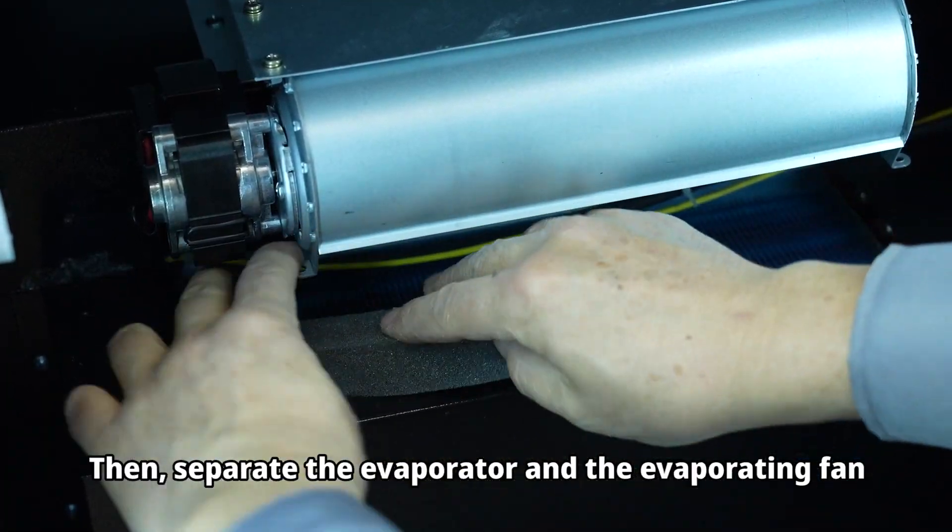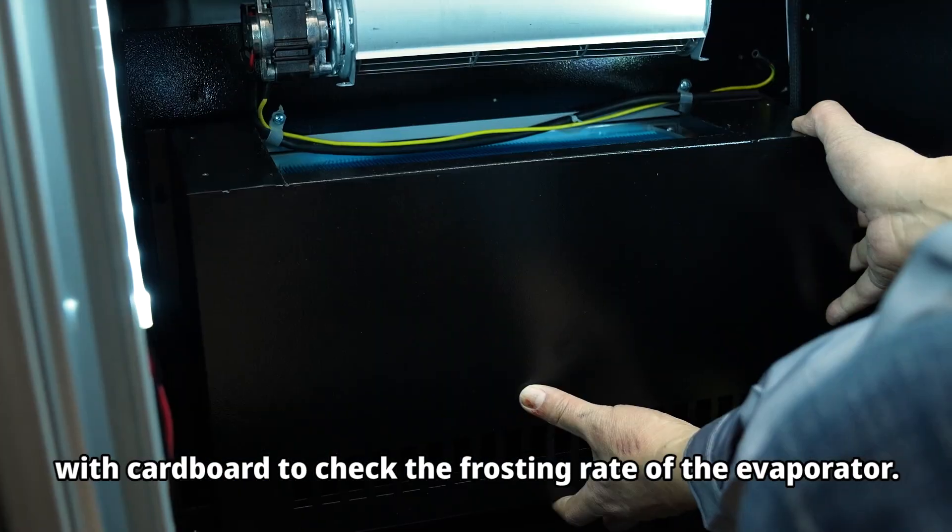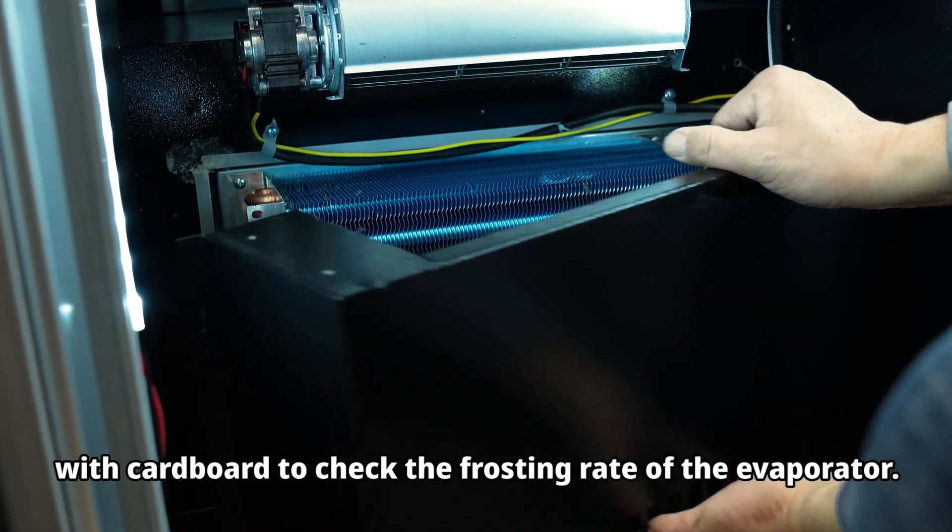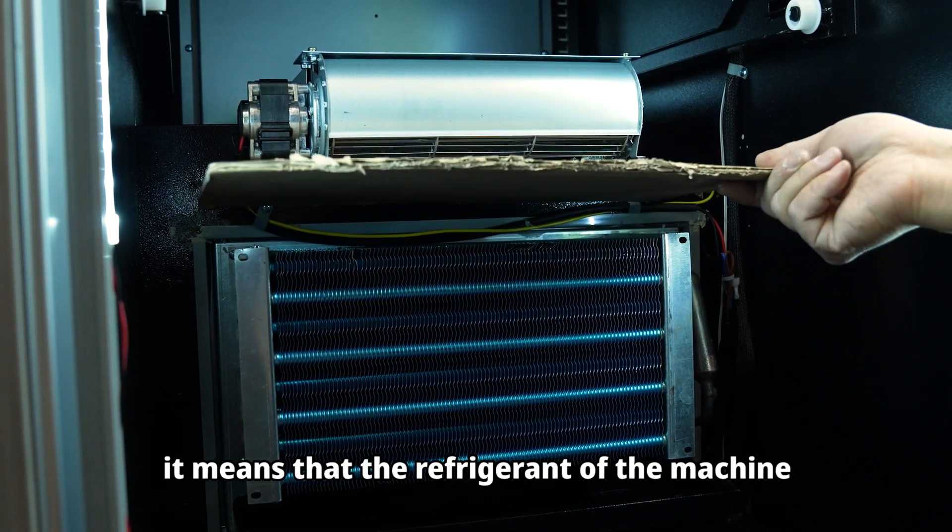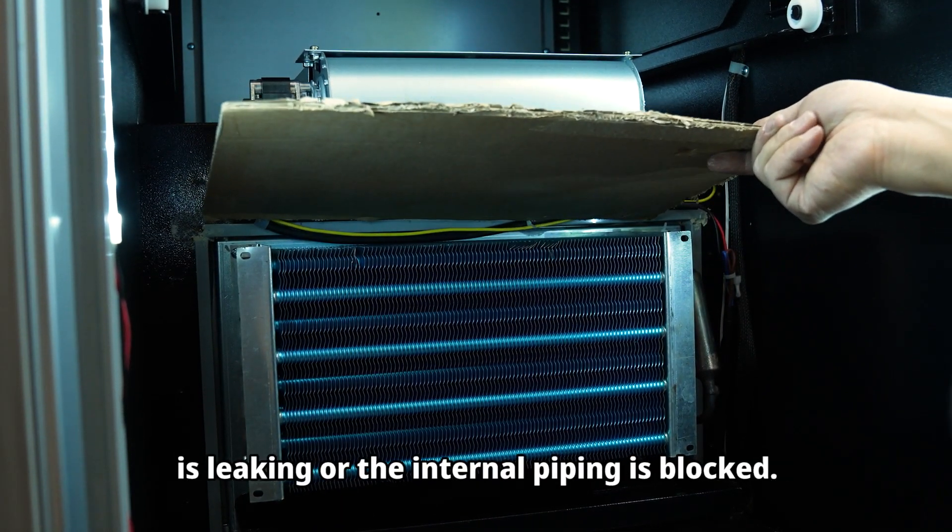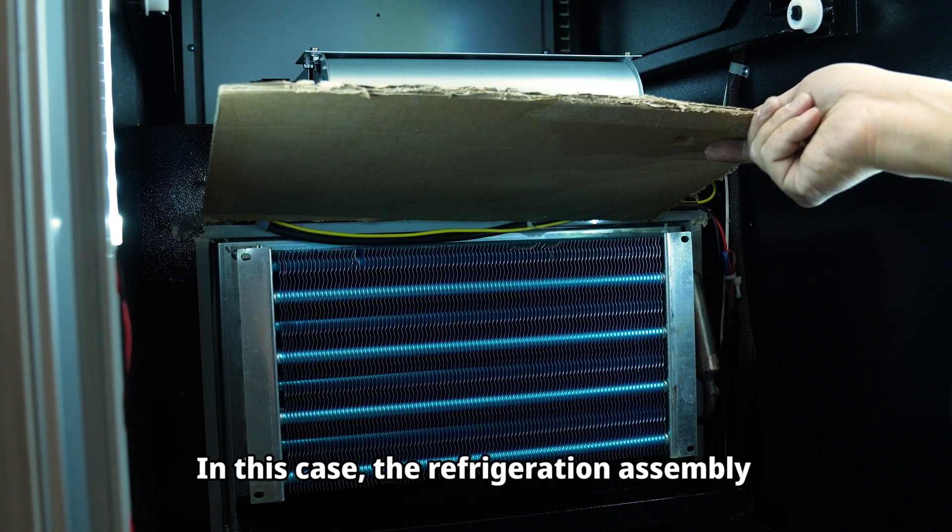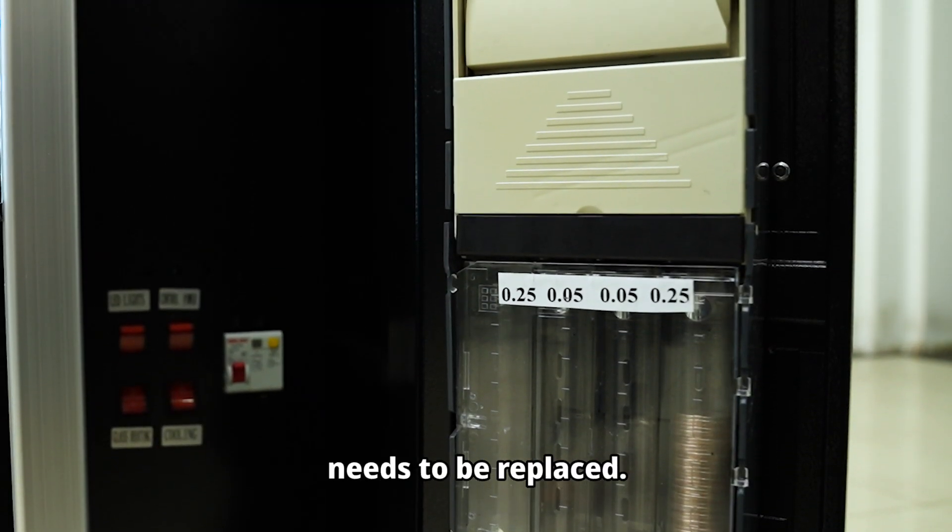Then separate the evaporator and the evaporating fan with cardboard to check the frosting rate of the evaporator. If there is no frost or partial frost, it means that the refrigerant of the machine is leaking or the internal piping is blocked. In this case, the refrigeration assembly needs to be replaced.